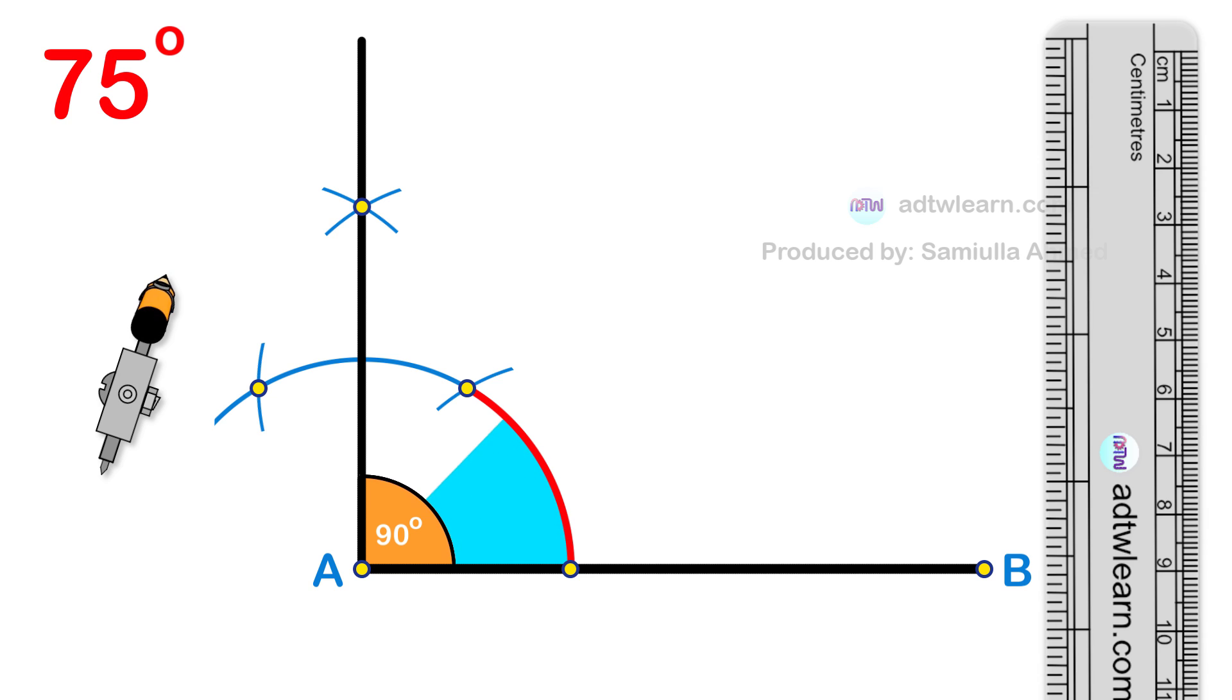Look closely. The angle made by this arc from here to here is 60 degrees. Similarly, the angle made by this arc is also 60 degrees.